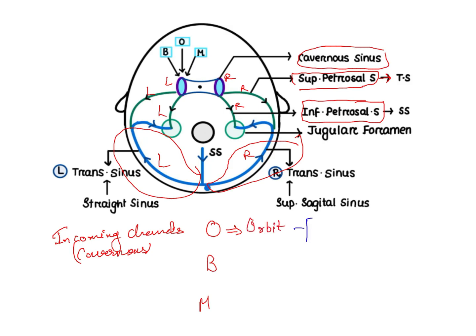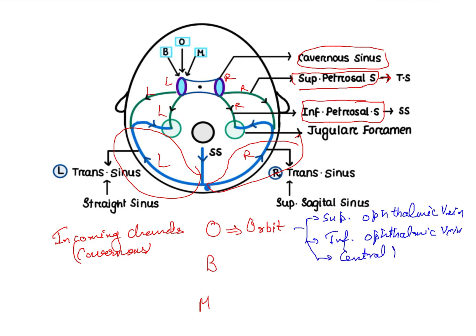O stands for the veins coming from the orbit. These are: the superior ophthalmic vein, the inferior ophthalmic vein, and the central vein of the retina. These veins coming from the orbit drain into the cavernous sinus.